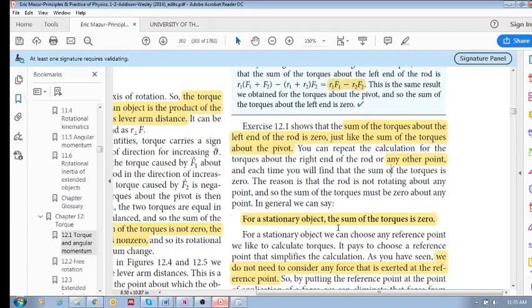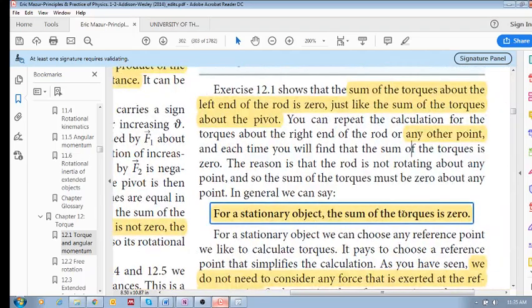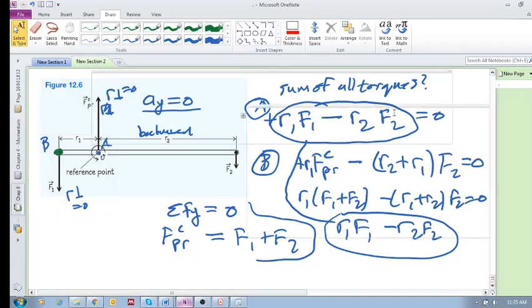So this is the conclusion: for a stationary object, the sum of the torques is zero, which makes sense. That is why we could add up the sum of the torques about this point or this point, and you should get the same answer, and it is equal to zero.